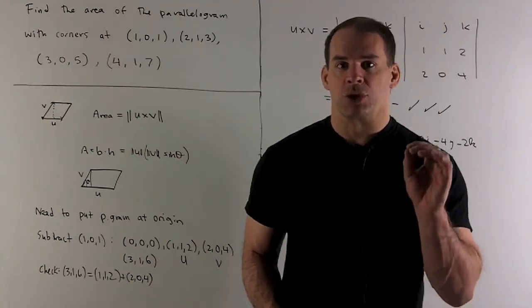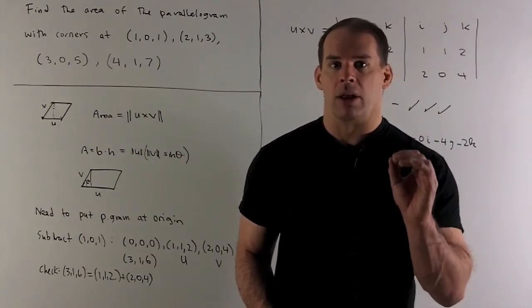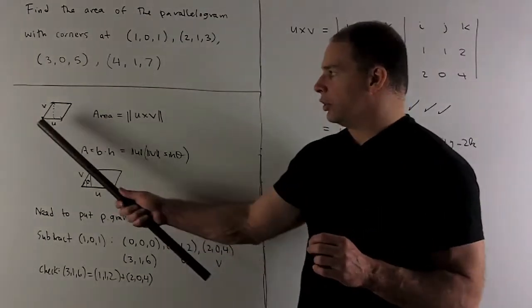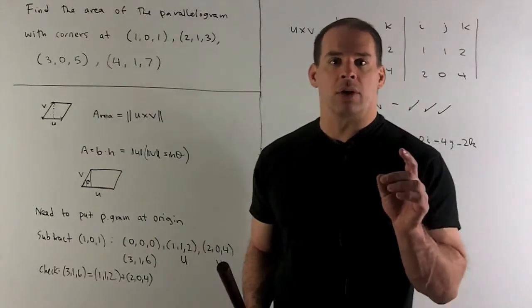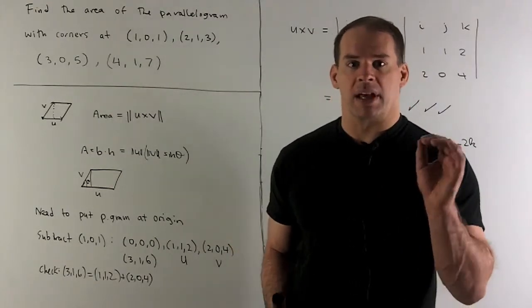Now, why is that true? Let's take a look at the picture of the parallelogram. So I'll have u along the bottom, v along the side. We have a parallelogram, so the area is base times height.